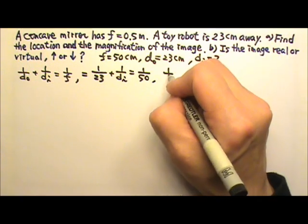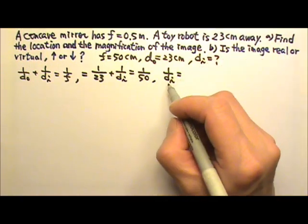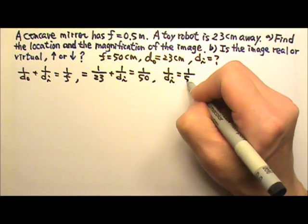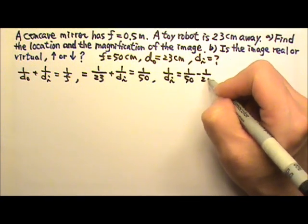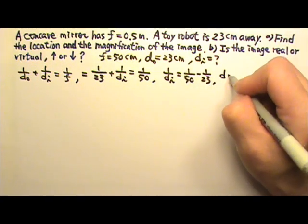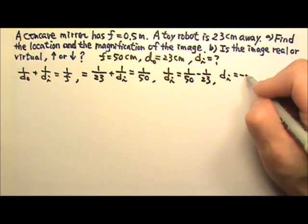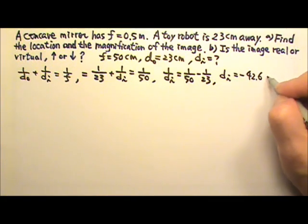So we can solve for dI. We get 1 over dI equals 1 over 50 minus 1 over 23. And this will give us dI that is negative 42.6 centimeters.